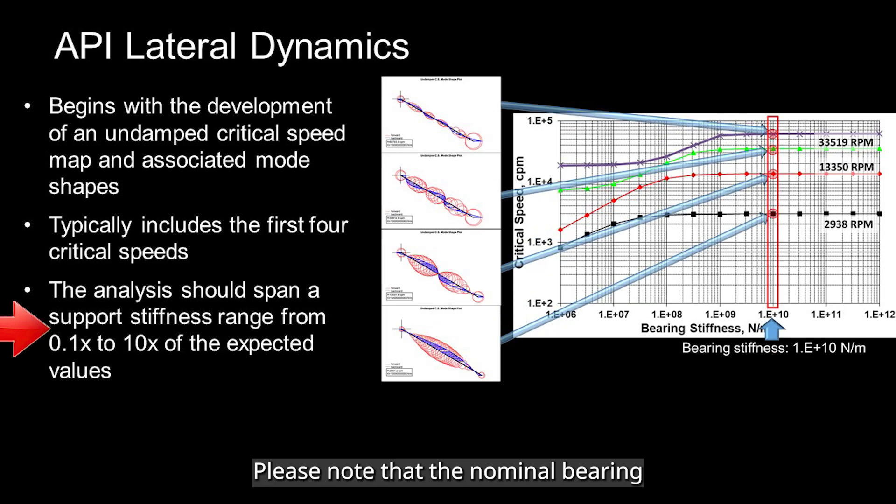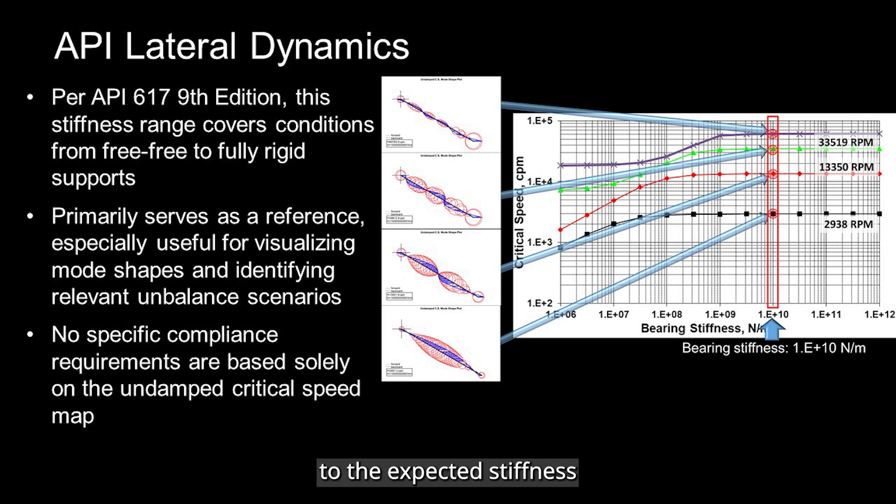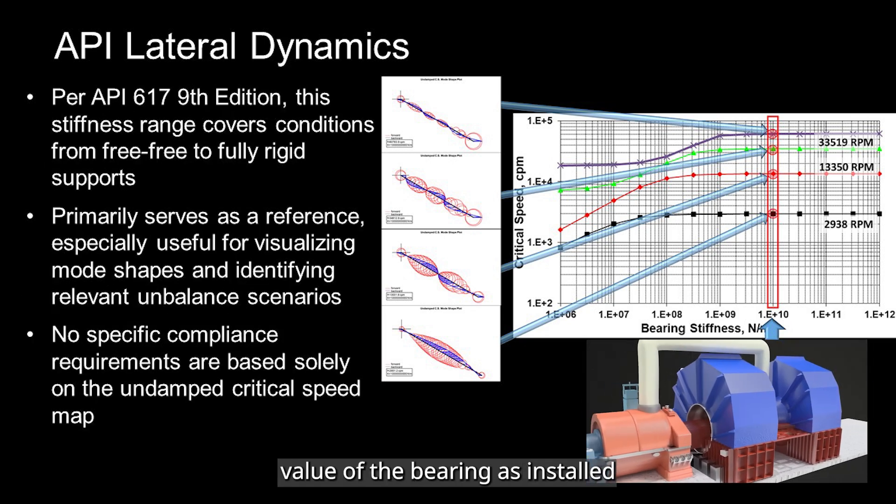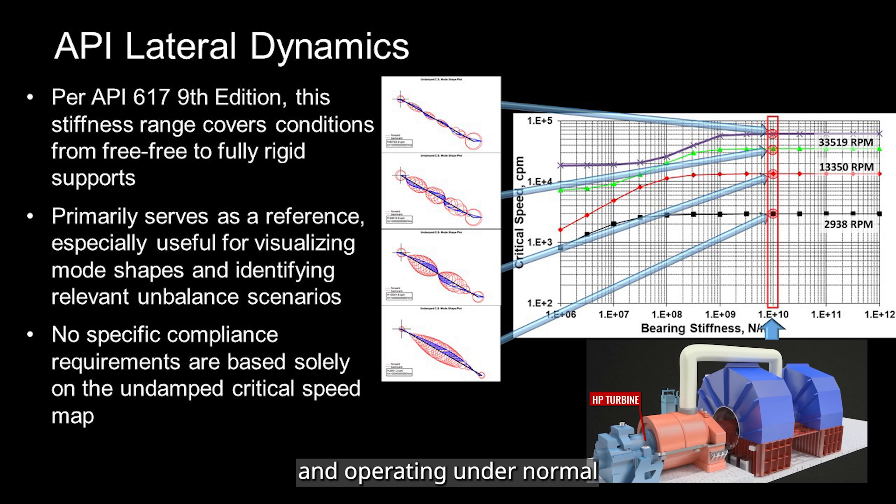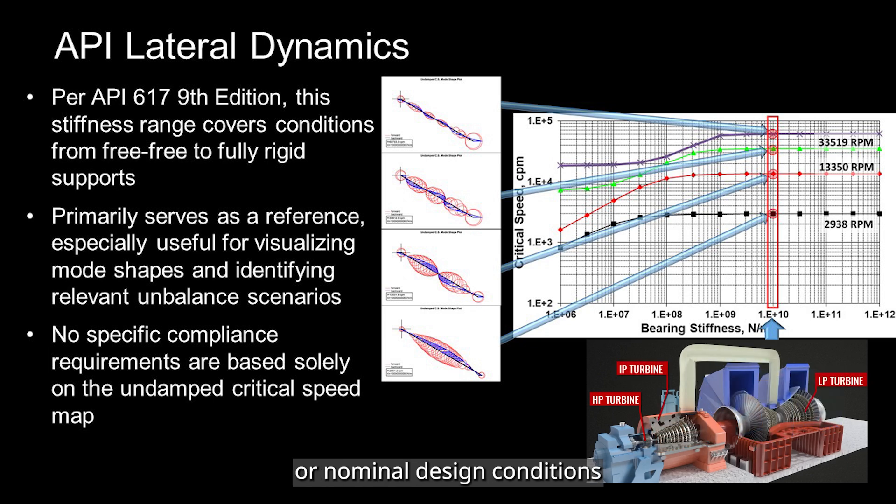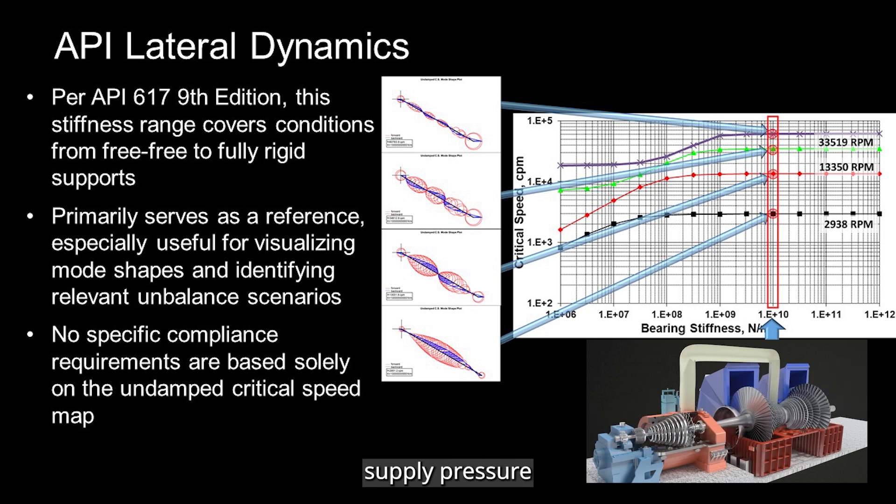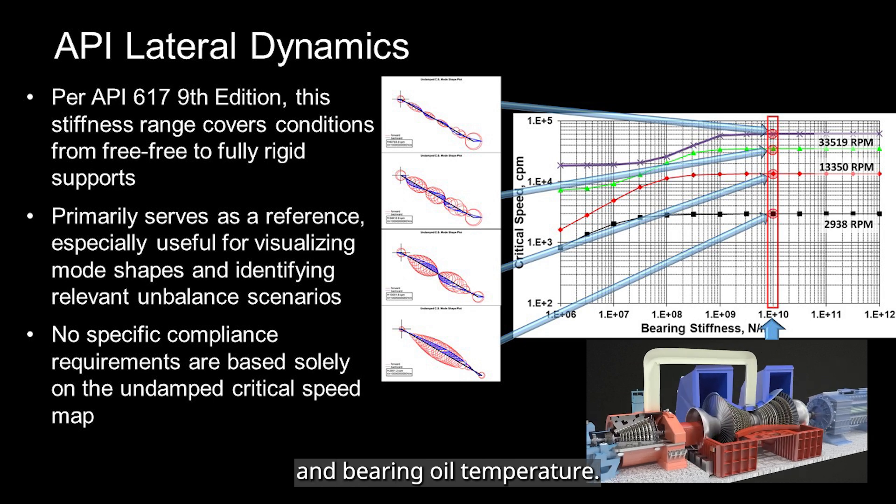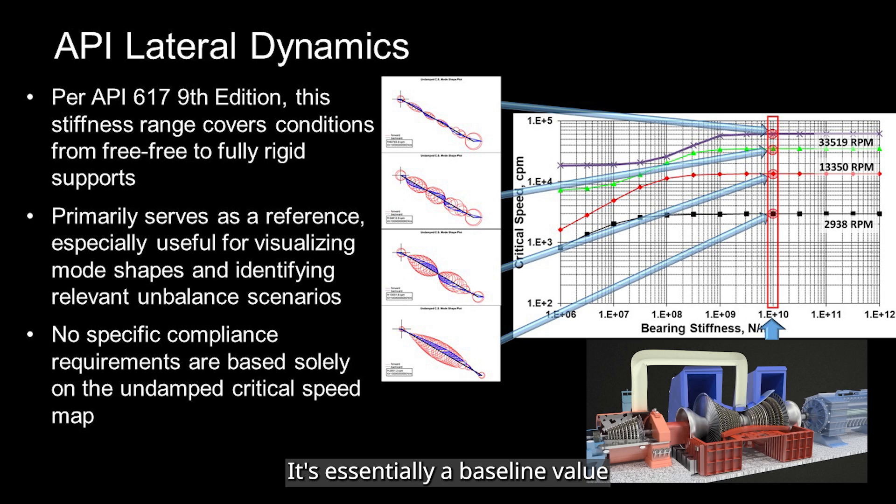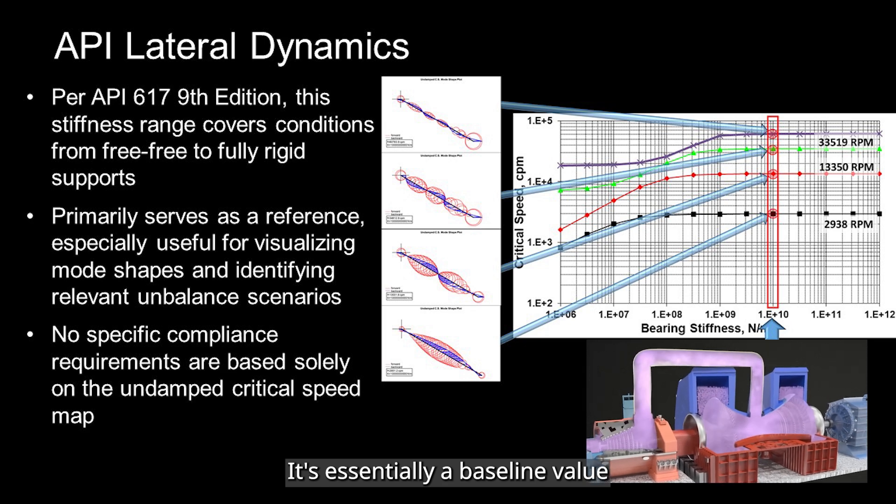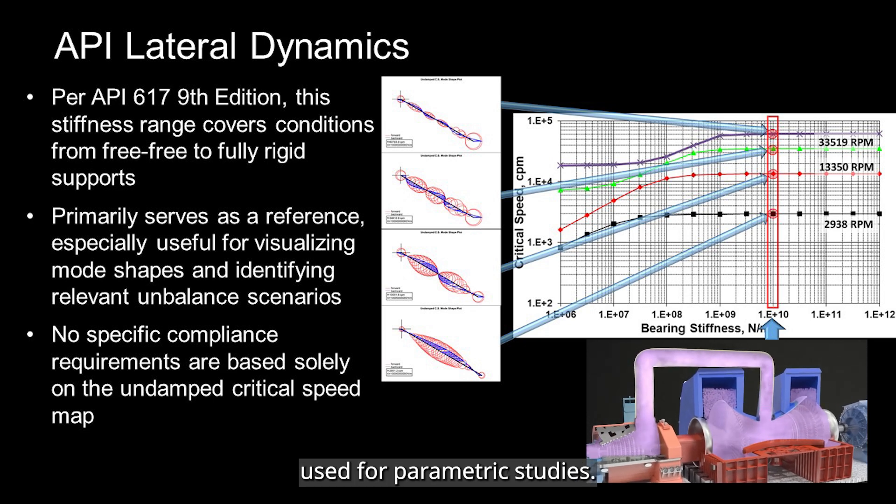Please note that the nominal bearing stiffness refers to the expected stiffness value of the bearing as installed and operating under normal or nominal design conditions, such as speed, load, bearing oil supply pressure, and bearing oil temperature. It's essentially a baseline value used for parametric studies.